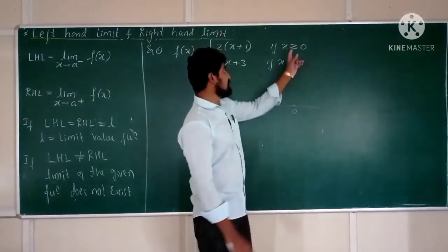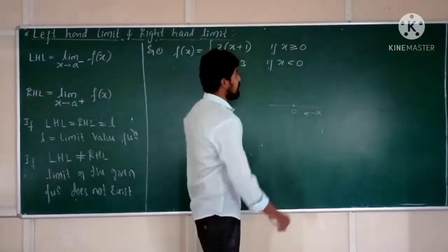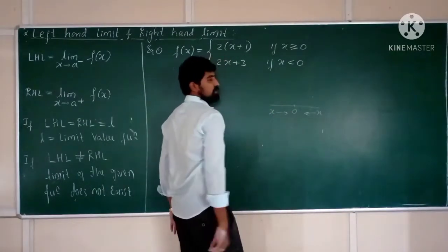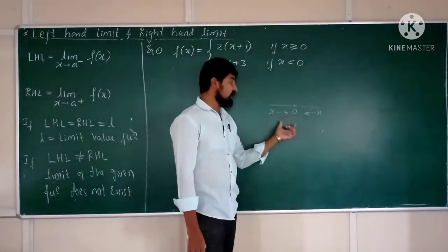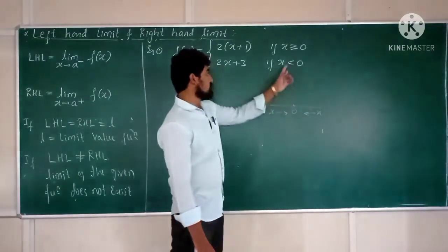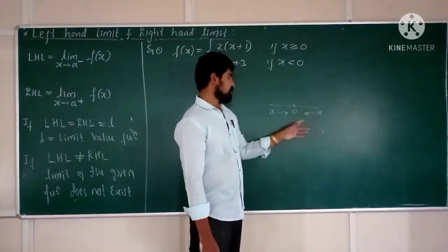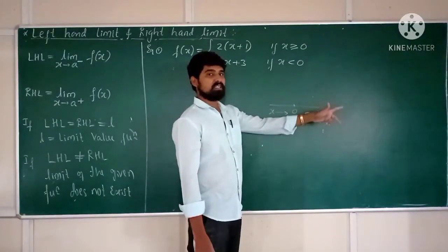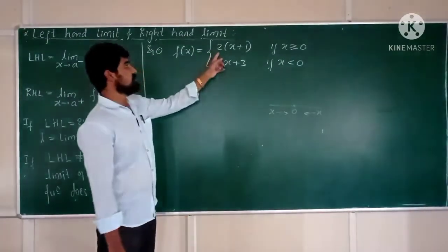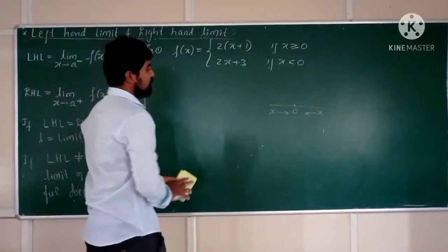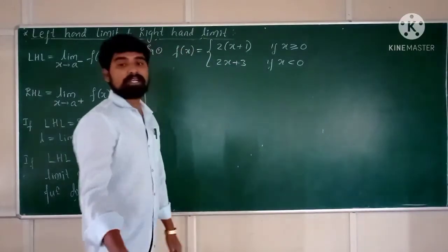If x is greater than 0, x is approaching to point 0 from its right side. If x is less than 0, x is approaching to point 0 from its left side. Obviously, if x is approaching to point 0 from its left side, the value of x should be less than 0, so the definition of F(x) is 2x+3. If x is approaching from its right side, x is greater than 0, so the definition of F(x) is 2(x+1). We need to find the limit value at x = 0.